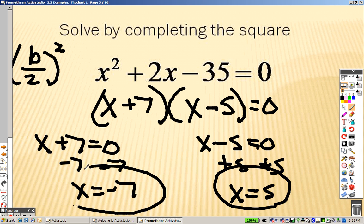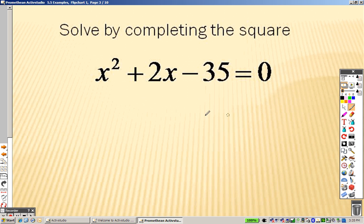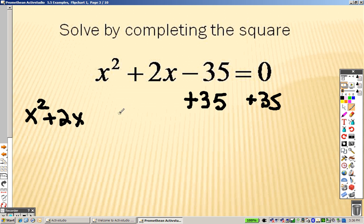But what if you can't factor? That's when you use that b over 2 squared. So here's how you complete the squares. First of all, whenever you're completing the squares, you get a number all by itself on one side. So you end up getting x squared plus 2x, leave some space, and that equals 35.